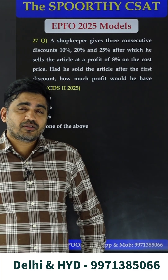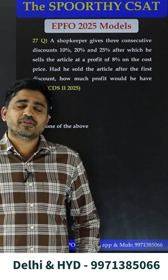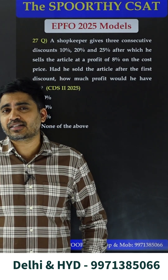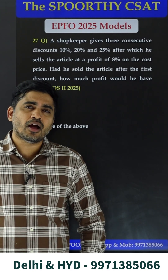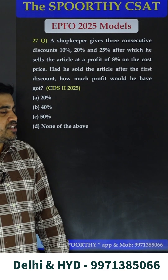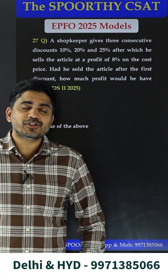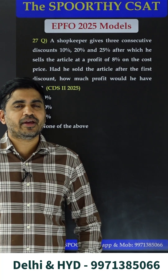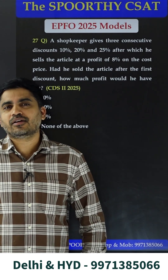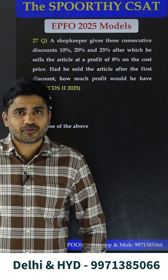This question is one of the best questions in the CDS 2 2025 paper, which is from the profit and loss topic. They are giving 3 successive discounts, and still he is making 4 percentage profit. The question is: if he gives only the first discount, how much profit will he make? We need to find the cost price and compare it with the selling price to find the profit.